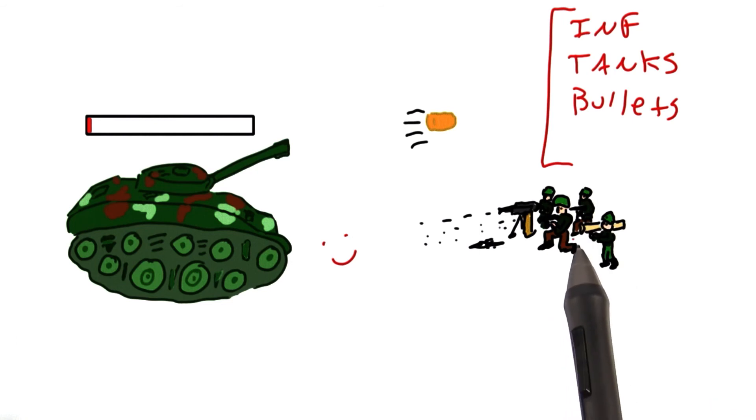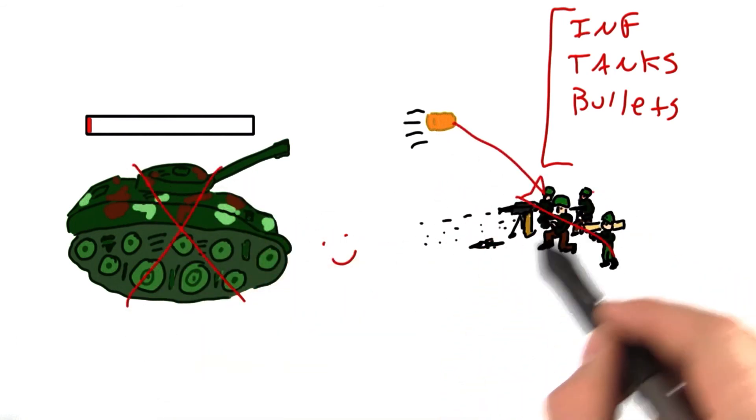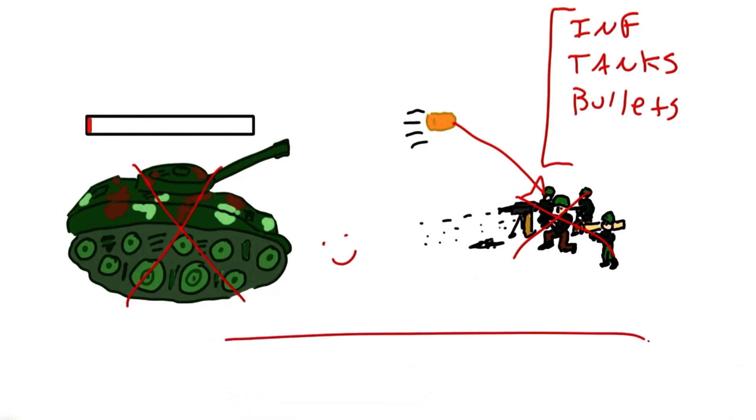With this layout, the infantry would update first, killing the tank, and then the bullet would update this frame, killing the infantry, leaving a level playing field for next frame.